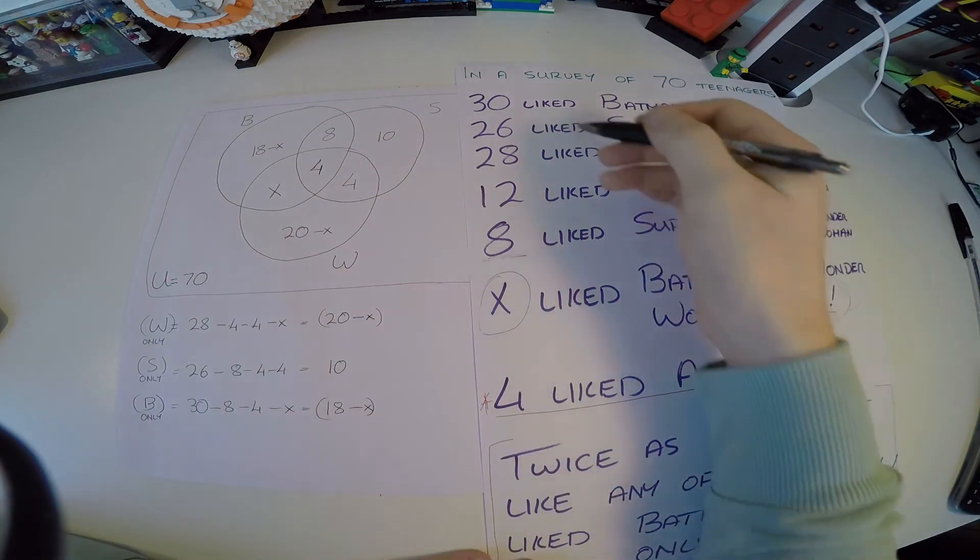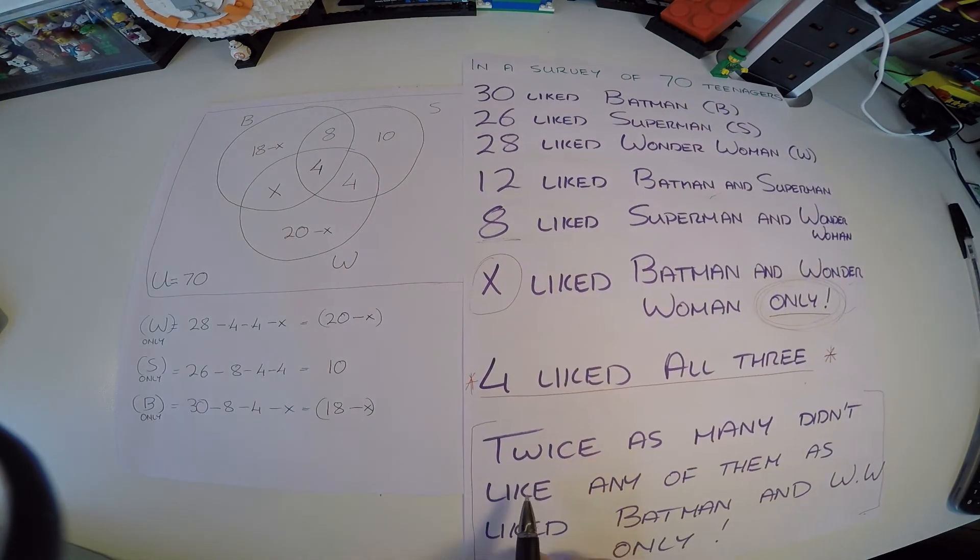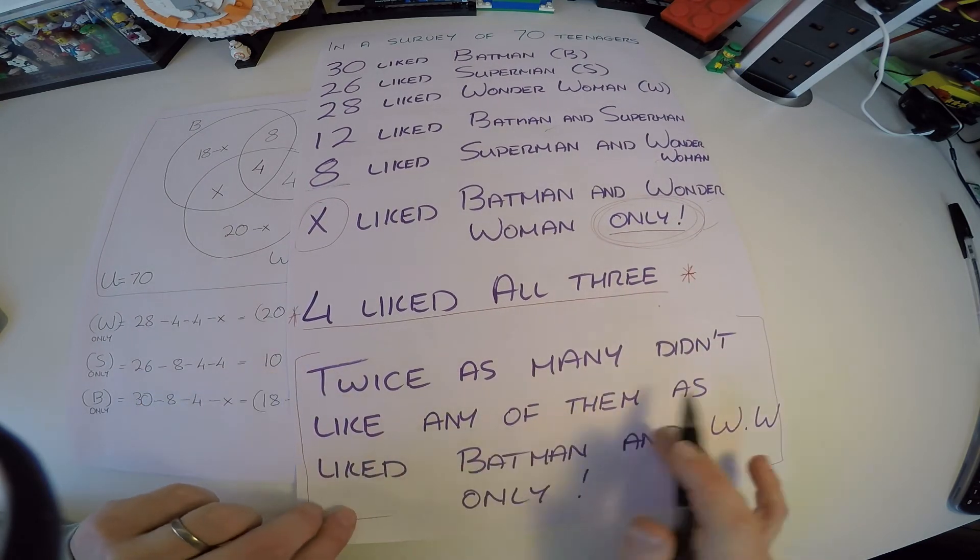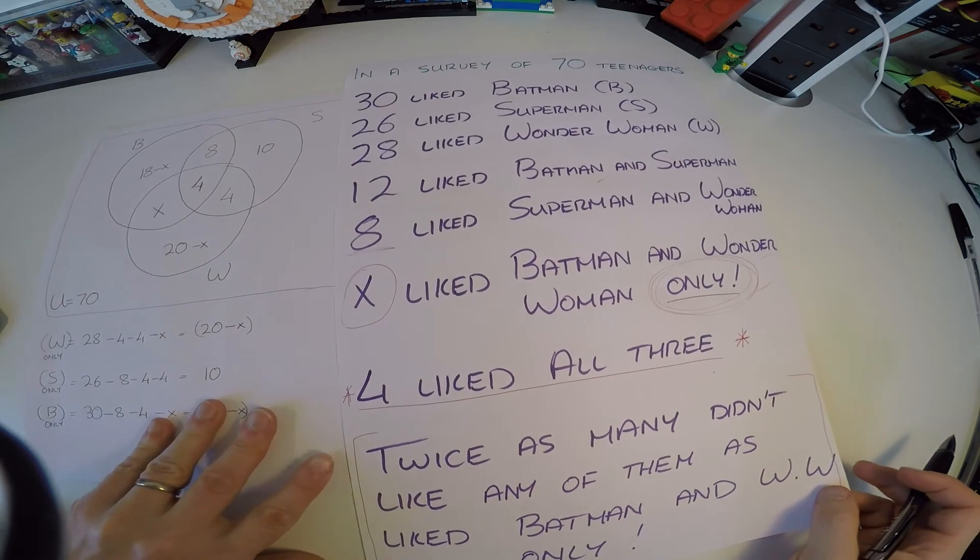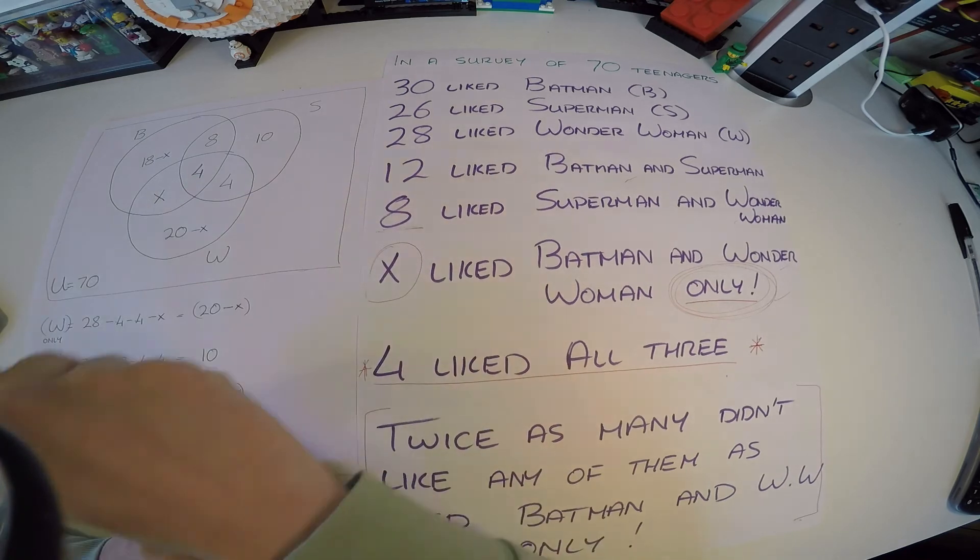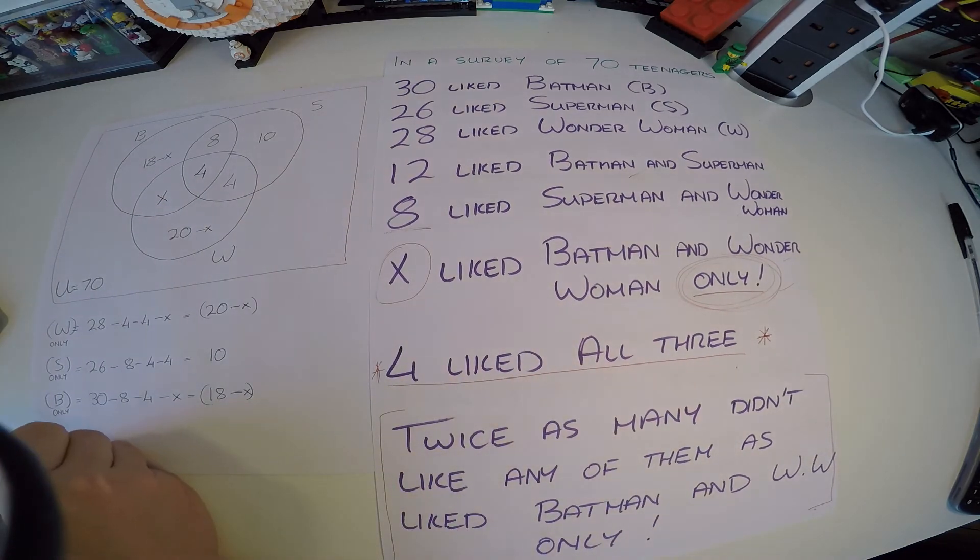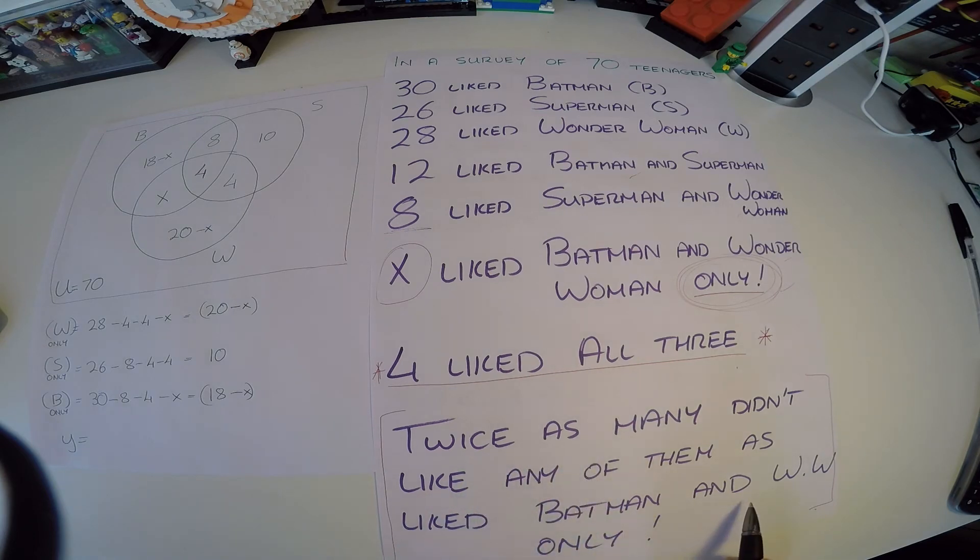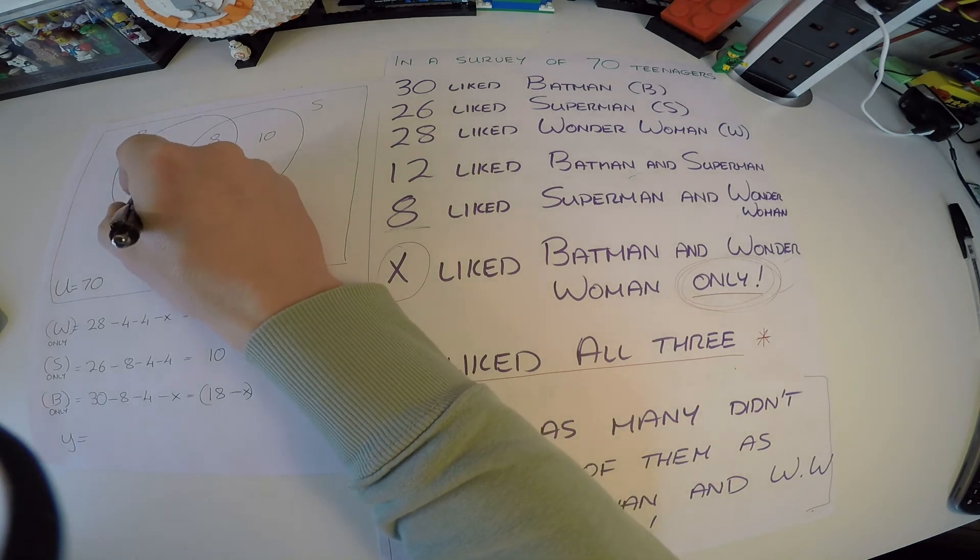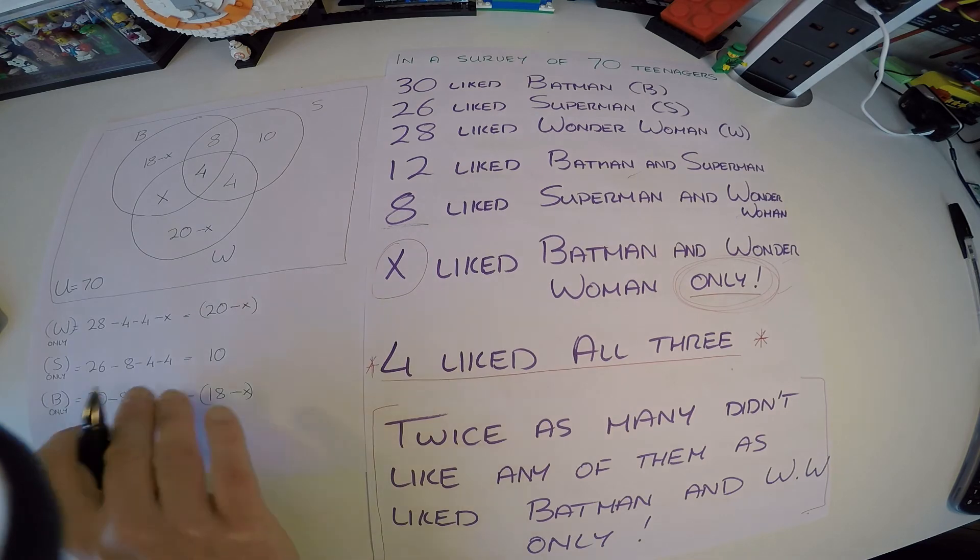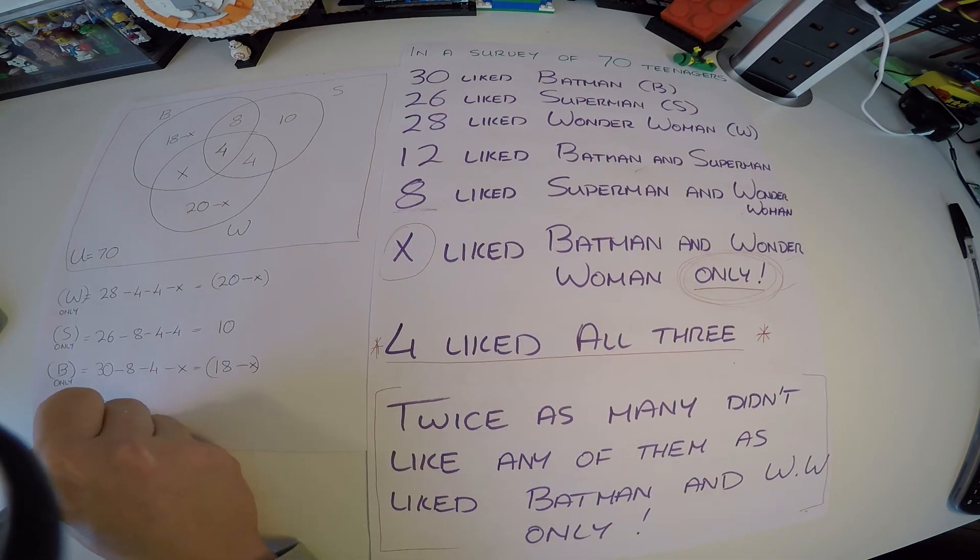Okay, now one bit of information was true here was this bit here. So what's going on with this bit here? It says twice as many didn't like any of them. So we know if you're not involved in any of these sections here, you're outside here. So what do we put out here? Well, let's say if we call that outside section y, we can't call it x. We know that that y is going to be twice as big as didn't like Batman and Wonder Woman only. Now the Batman and Wonder Woman only is x, so if the number out here is twice as big as that, what are we going to call it? Well, it's 2 times x, which literally is 2x.